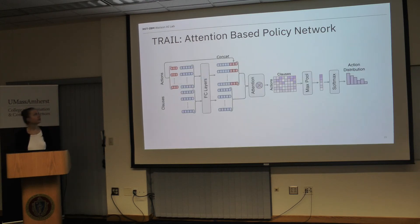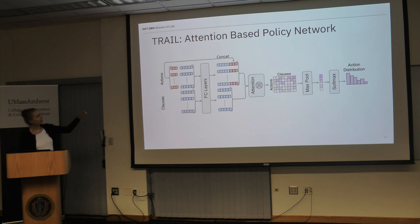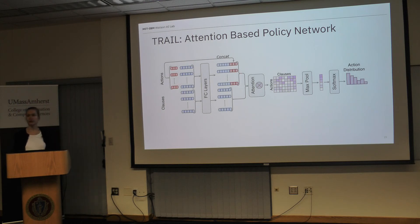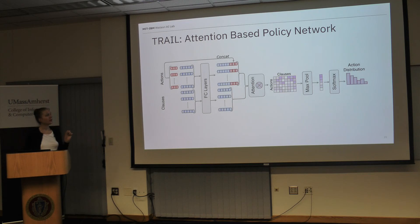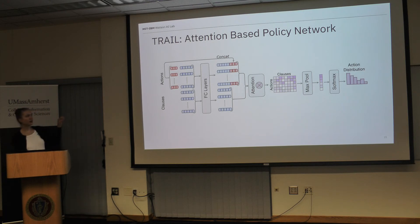In the reinforcement learning agent, we use a neural network to get our policy. We have the embeddings from the previous step; for the actions we encode the inference rule as a one-hot vector. We create dense embeddings by passing them through fully connected networks, and concatenate the inference rule part again for the actions. To get a distribution over actions with respect to the formulas selected in the proof so far, we use attention — computing attention between different actions and selected clauses — then do max pooling per action and apply softmax to get the final distribution.